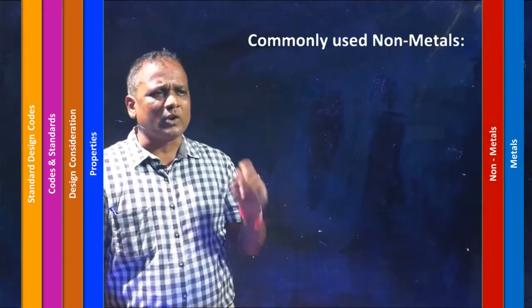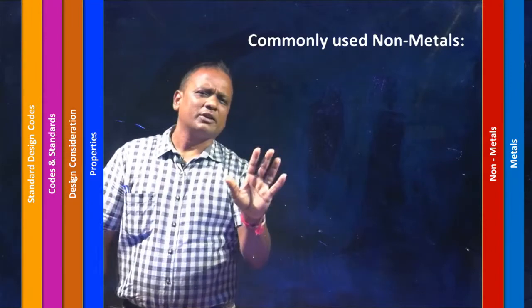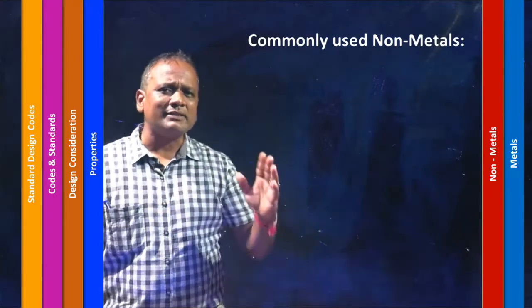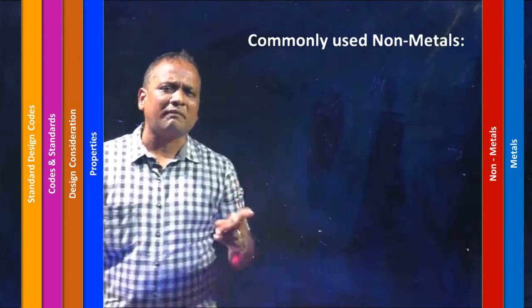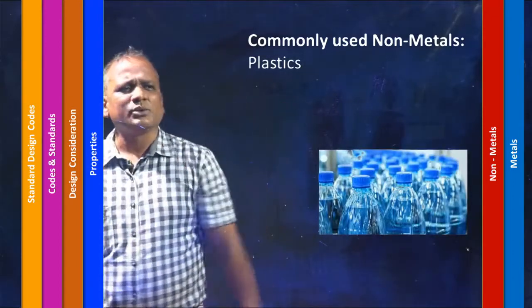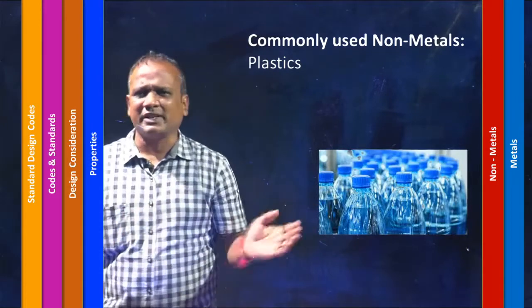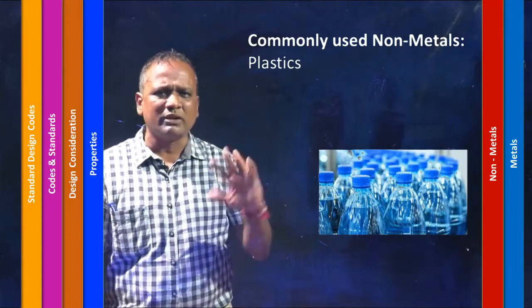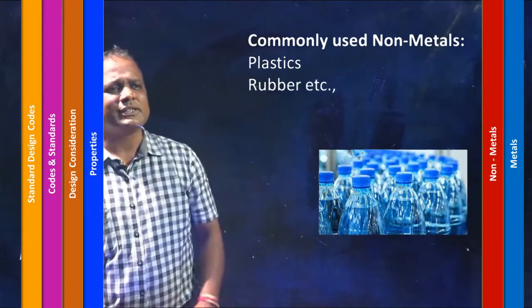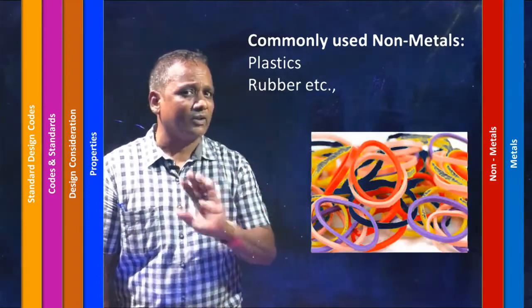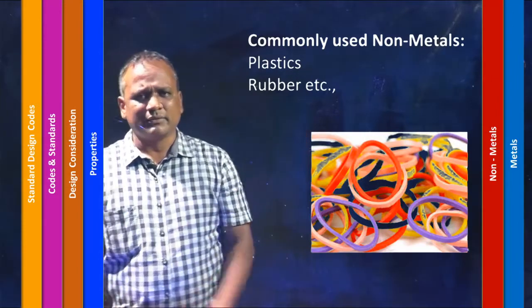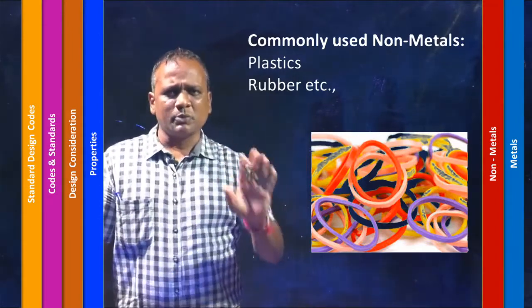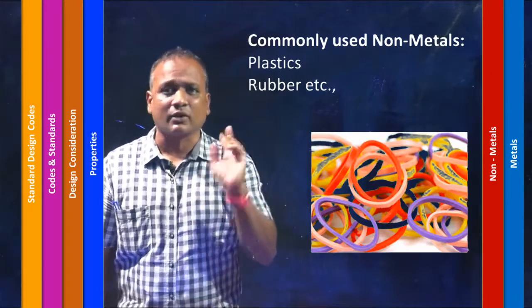Moving to non-metals, the first that comes to mind is plastics, which has made such a big impact. Plastic chairs, plastic doors — around 90% of things in the world are made of plastic. Next would be rubber, also a very commonly used non-metal. Whenever choosing a metal or non-metal, it should be abundantly available, very cheap, and should possess good technological properties.